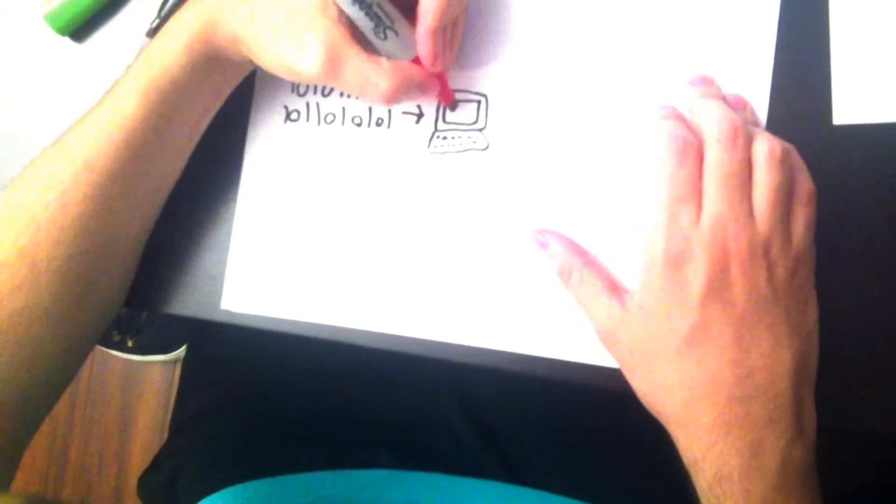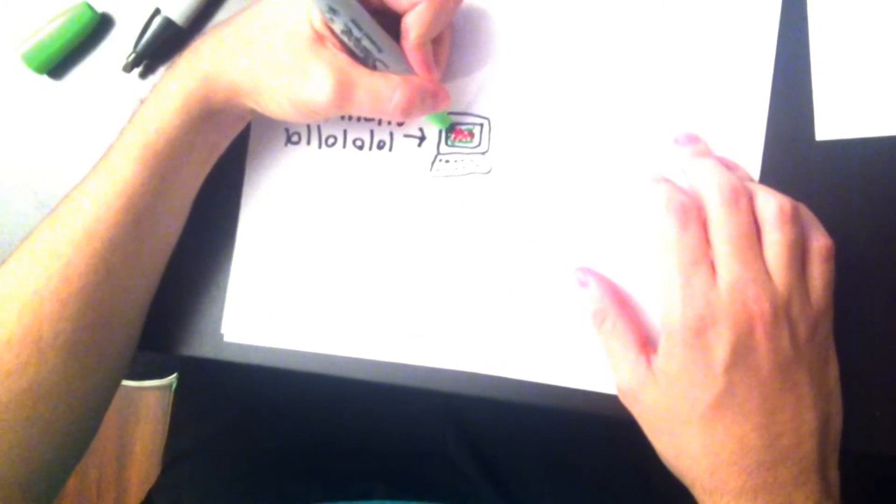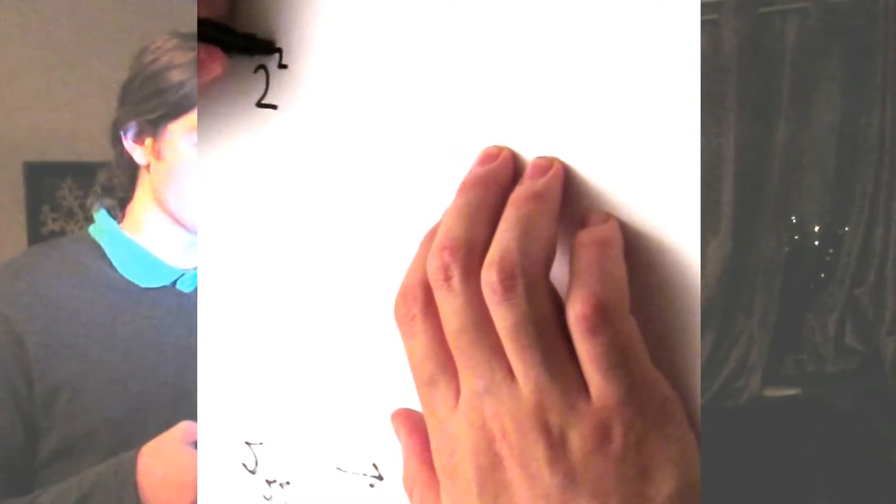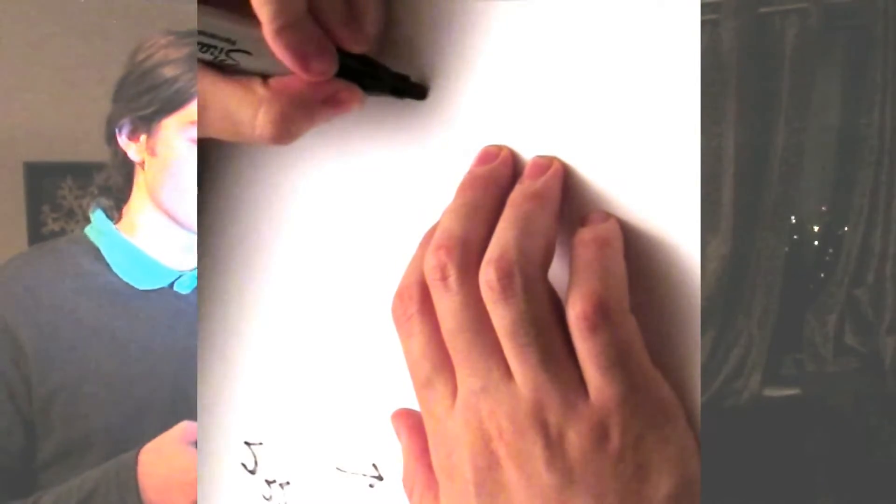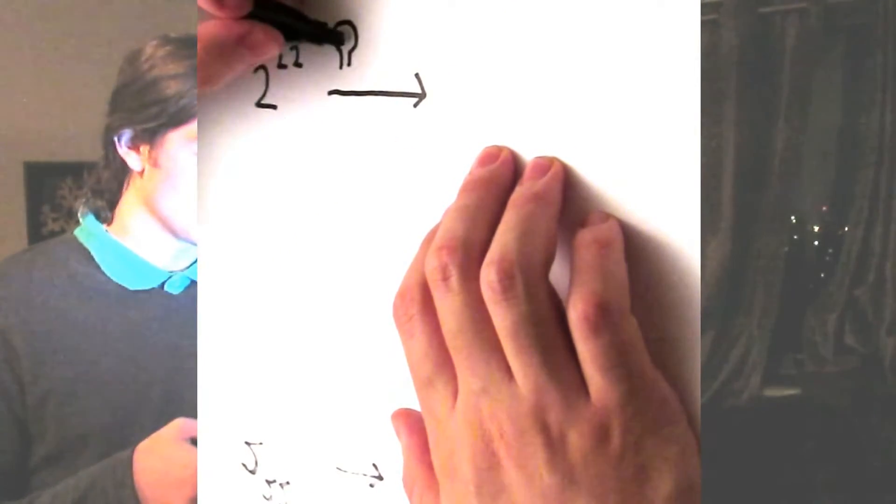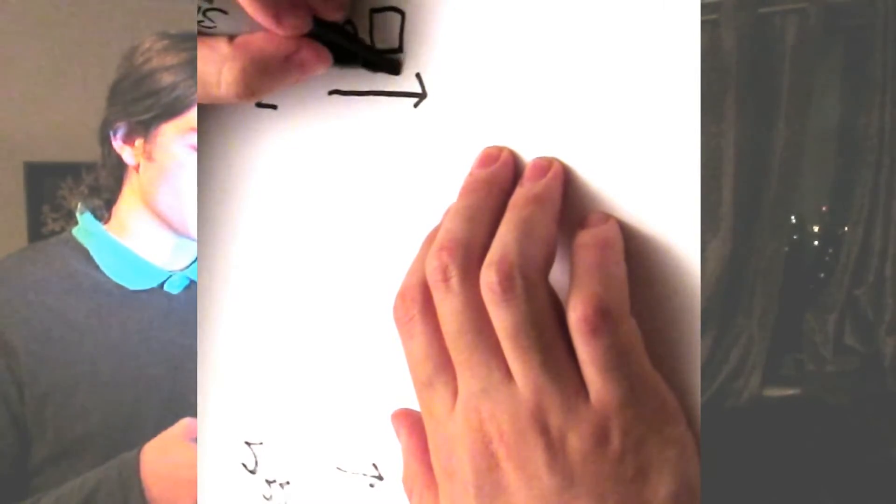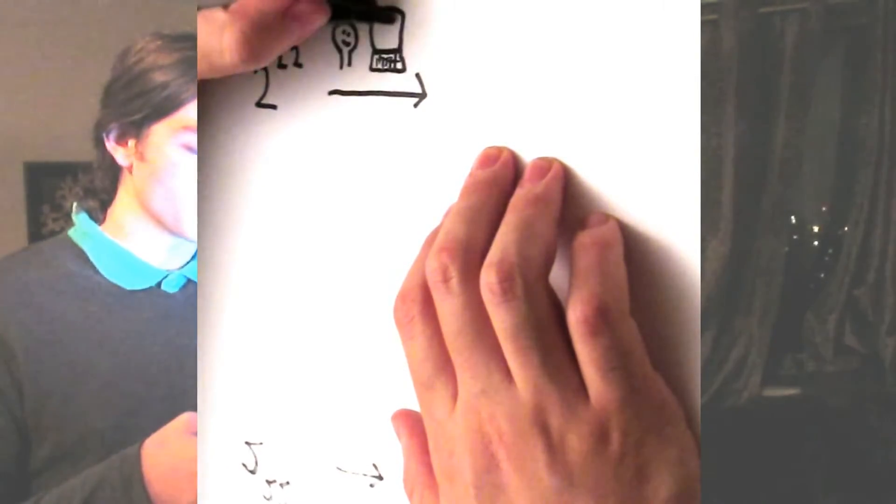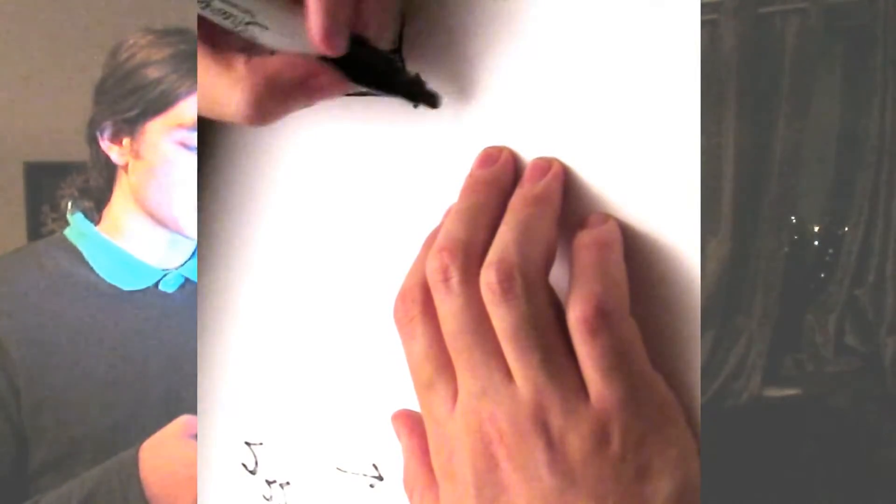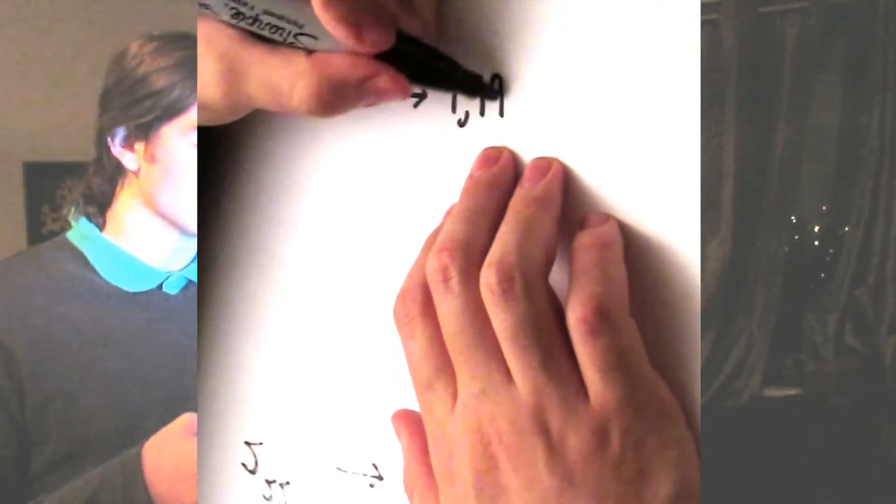Just like our brains take descriptions to things. But while we don't know exactly how our brains represent the descriptions of things, we know computers understand them as binary sequences of ones and zeros. Consider this, that 2 to the power of 22 is a description of 4,194,304 in the language of arithmetic.